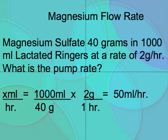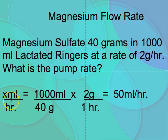Next problem: magnesium sulfate 40 grams in 1000 milliliters of lactated Ringer's, at a rate of 2 grams per hour. What is the pump rate — what would the nurse set the pump to? We are looking for flow rate in milliliters per hour.